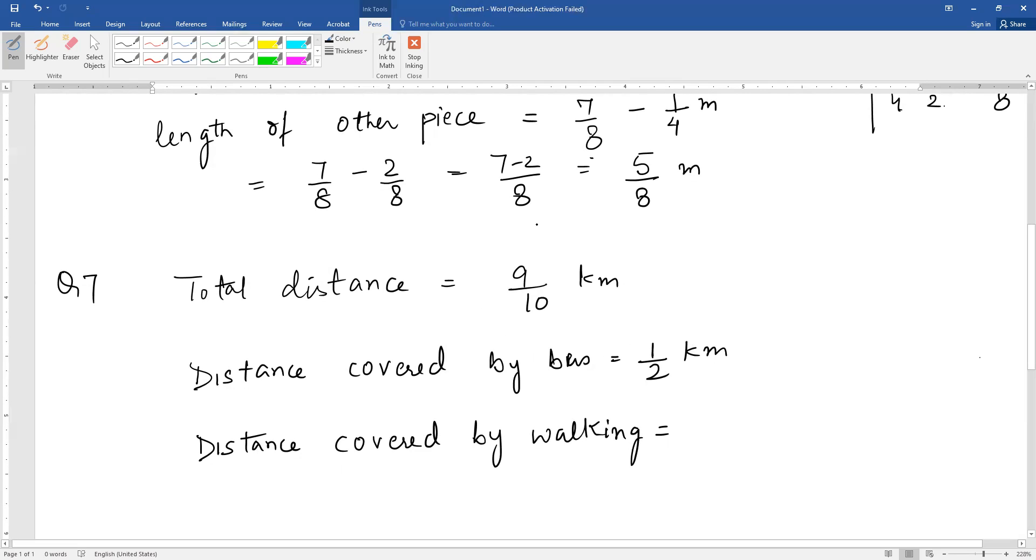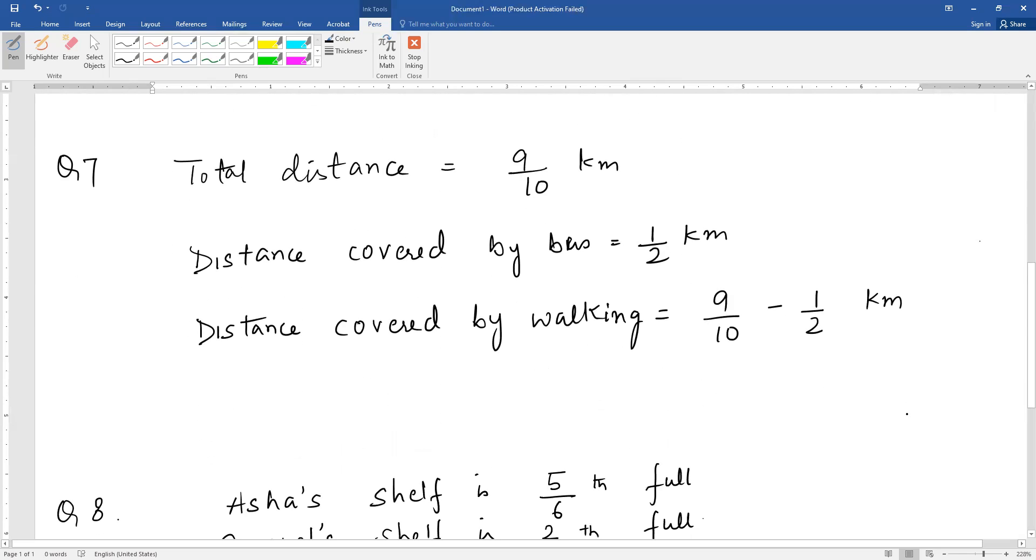How will we find the walking distance? Out of 9/10 kilometers total, 1/2 kilometers was covered by bus. The rest was walking. The difference between these two is the distance covered by walking. Both are in kilometers, so we don't need to change units.